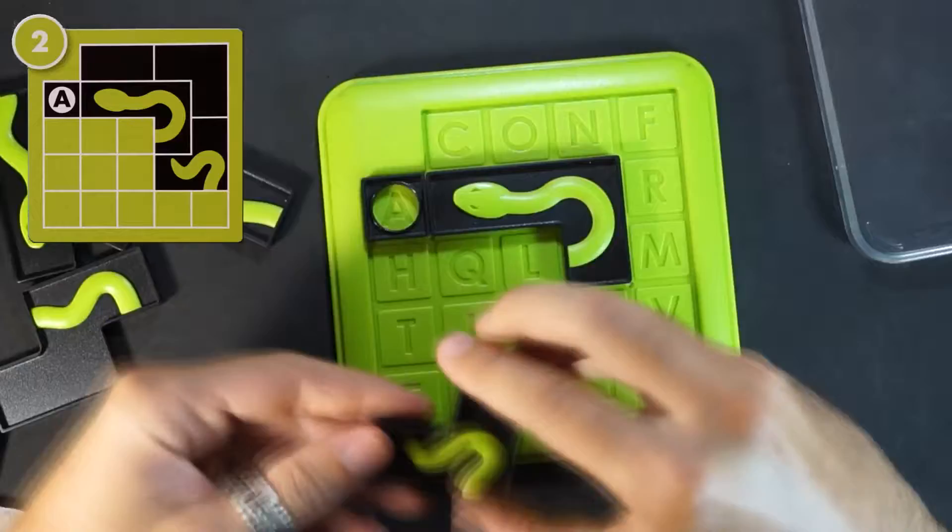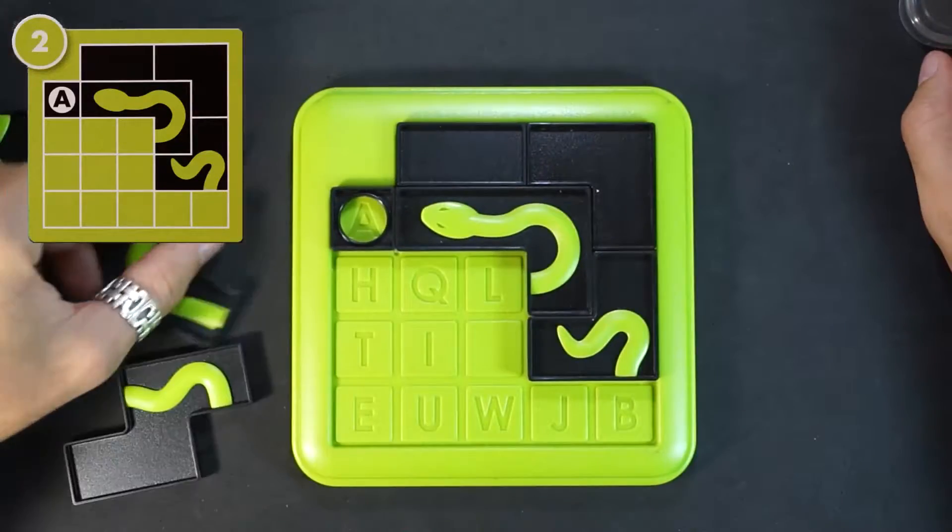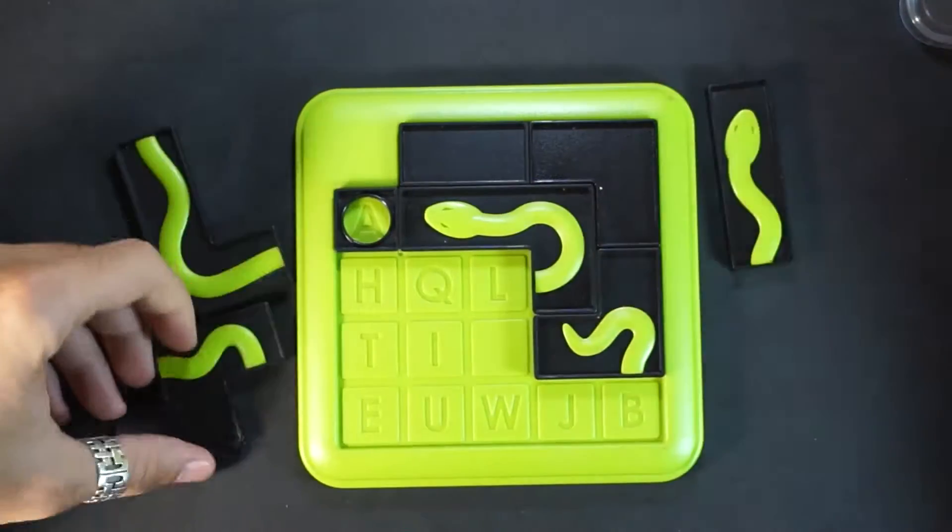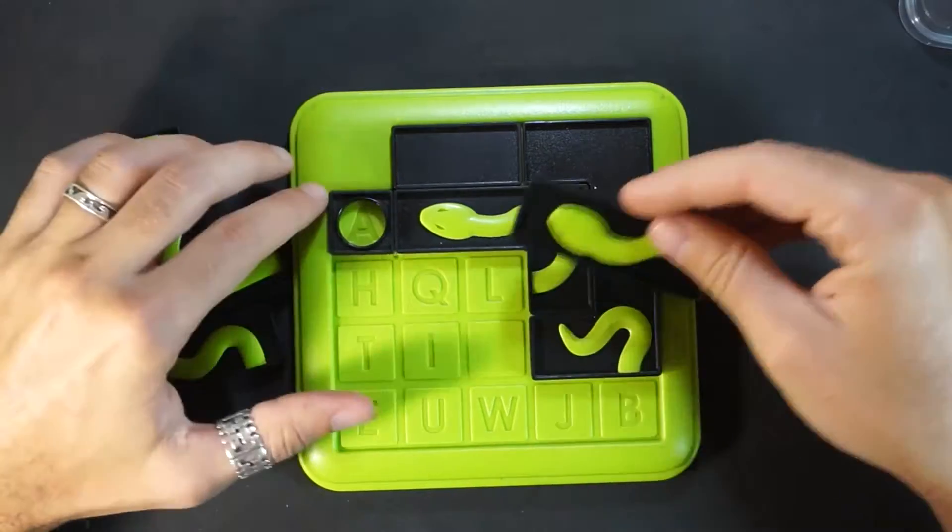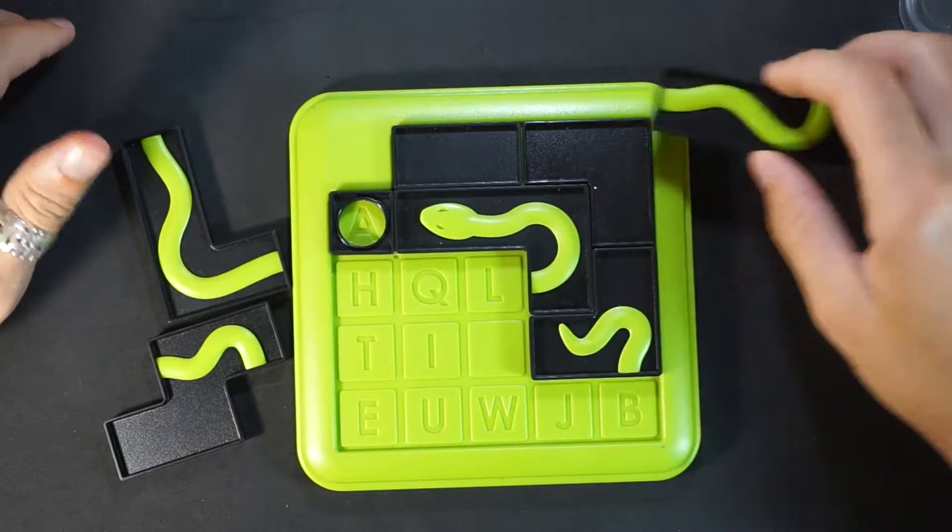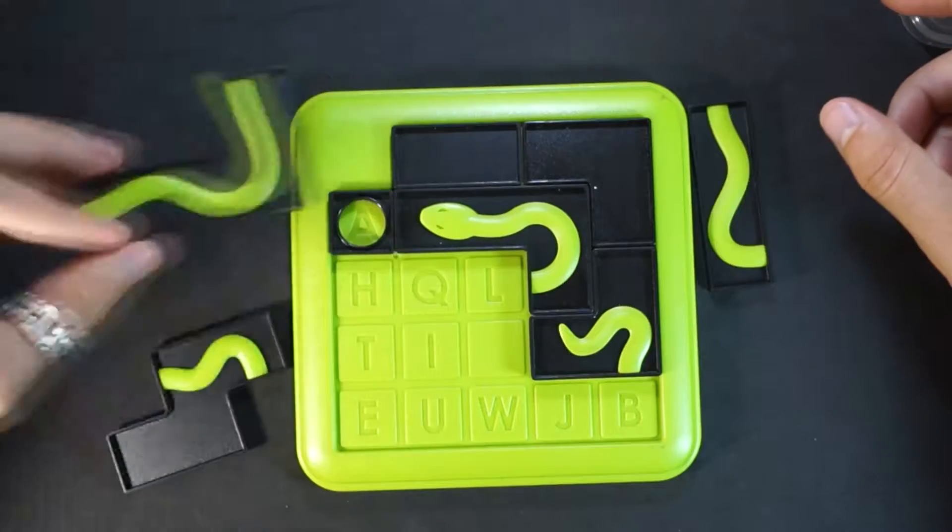Once again place the pieces as shown in the challenge picture. Just like before, if we already have a head, this piece must be played with its other side. So I'll turn it over. The second piece we have no idea about and the same with the third.